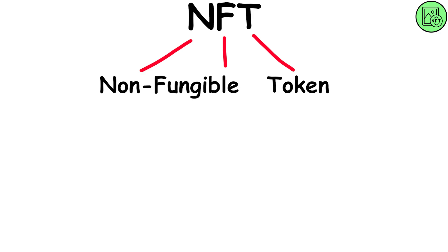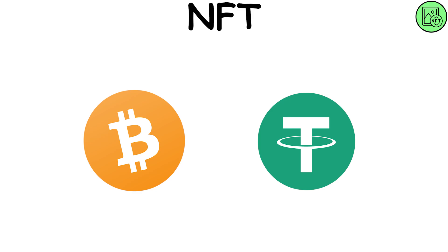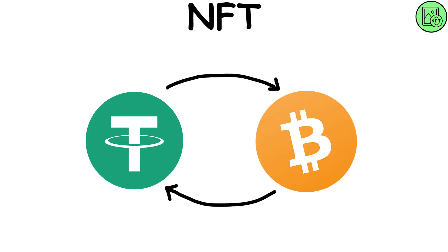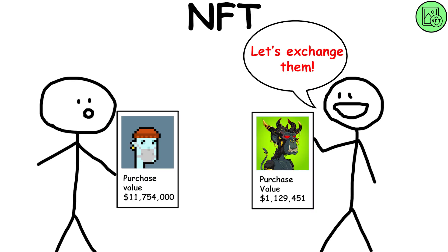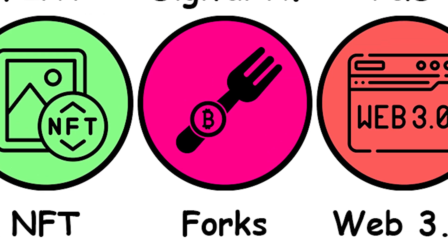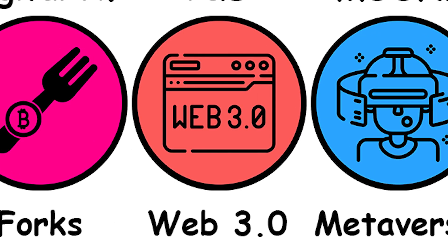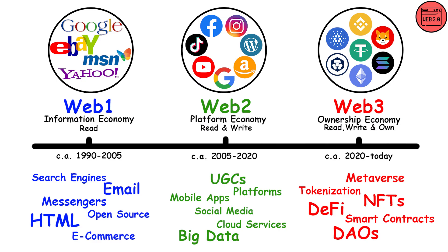NFTs — non-fungible tokens: these are unique digital works of art that cannot be replaced. For example, a cryptocurrency can be exchanged for another cryptocurrency, while a work of art is unique and therefore not fungible, unless it is sold or bought. Forks: it is a change within the blockchain that brings improvements or introduces new features to it. Web3, or Web 3.0, is characterized by a decentralized approach open to all, based on blockchain technologies and semantic web developments.